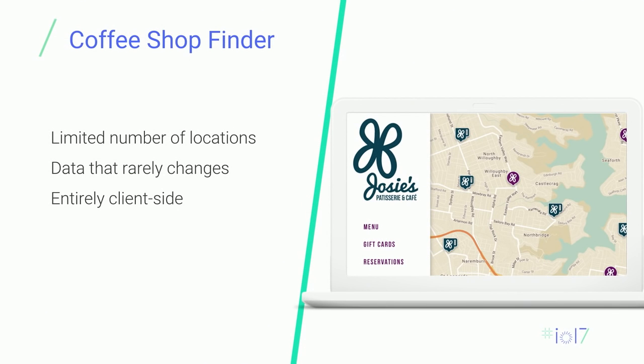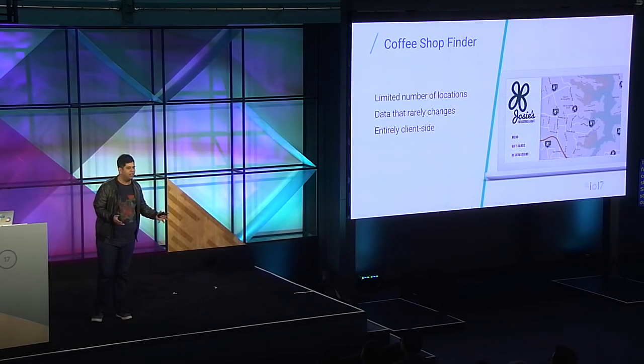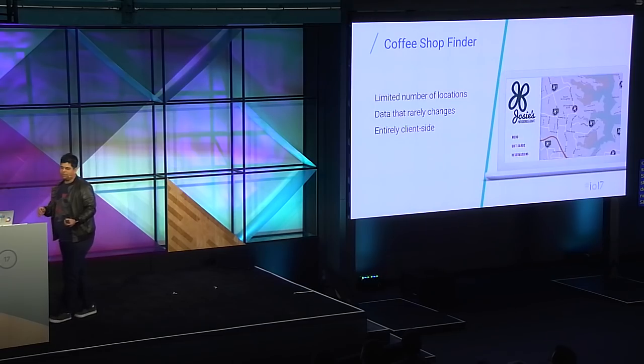We've created a fictional coffee shop called Josie's Patisserie and Cafe. Josie has a successful business in the UK with a number of stores, and that data doesn't change often — she has a fixed number of shops, maybe a new store opening, or hours that vary by season. Let's look at a quick demo of Josie's coffee shop finder.